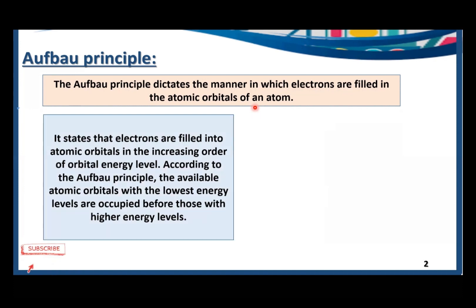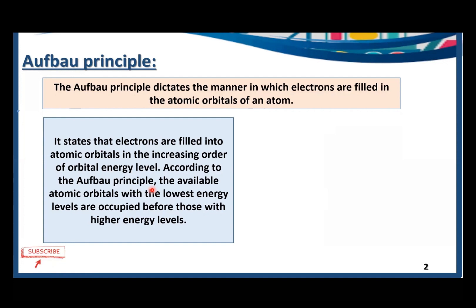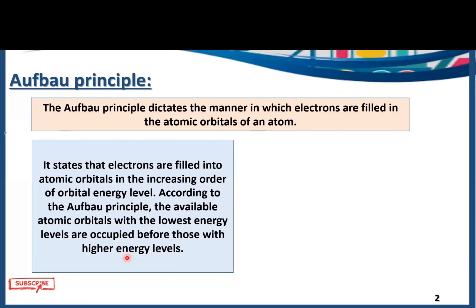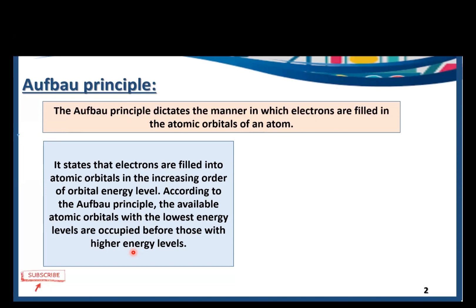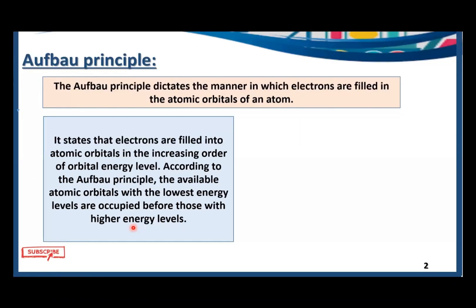What is the Aufbau principle? It states that the electrons are filled into atomic orbitals in the increasing order of orbital energy level. The available atomic orbitals with the lowest energy levels are occupied before those with the higher energy levels. The ones with low energy are more stable, so electrons fill lower energy levels first.